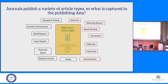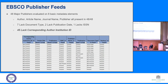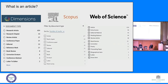EBSCO had problems with document type as well — seven of the publisher feeds didn't indicate the document type at all, and what the document was called differed across feeds. In Dimensions, Scopus, and Web of Science there's different terminology for these things. This is the same search — one institution, one year, one publisher — across those three databases, and the numbers vary partly because they index different journals, but also because they don't use the same terminology to describe what an article is.